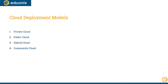Let's get started. Cloud deployment models basically means the different types of clouds. When you say cloud, you are most likely referring to a public cloud. But there are a bunch of other clouds out there. The first one is the private cloud, then comes the public cloud, then a hybrid between private and public, and there's this new thing called the community cloud.